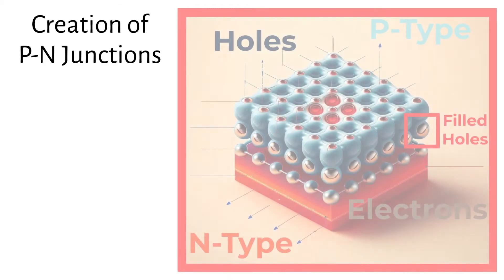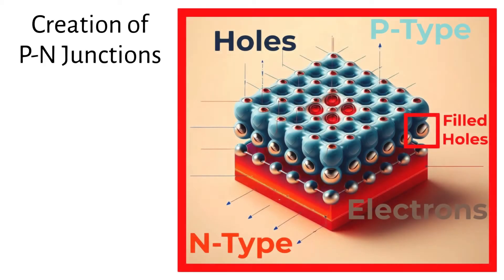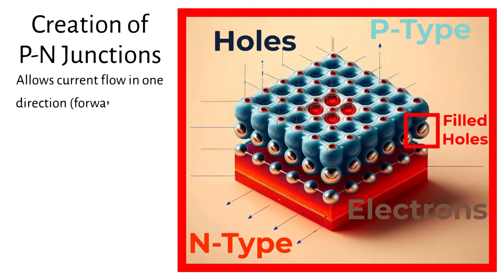When p-type and n-type materials are joined, they form a p-n junction, essential for the operation of modern electronic circuits. The junction allows current to flow easily in one direction — forward bias — and blocks it in the other — reverse bias.